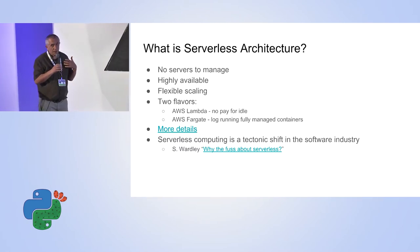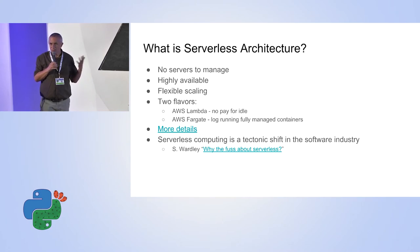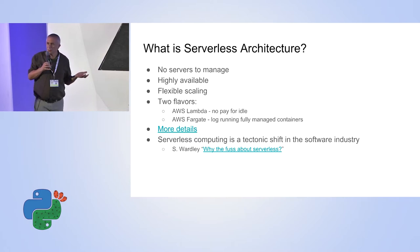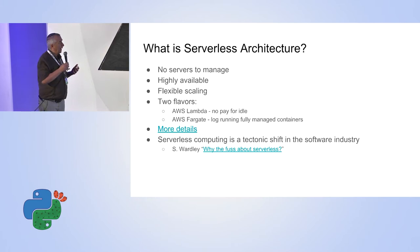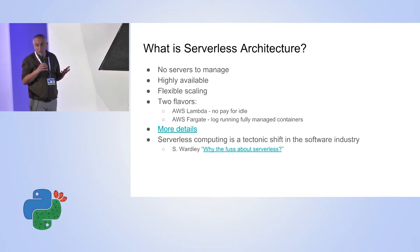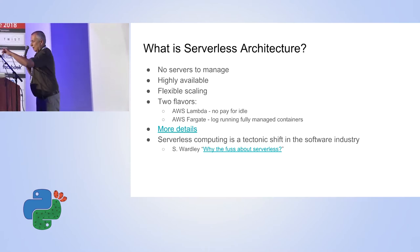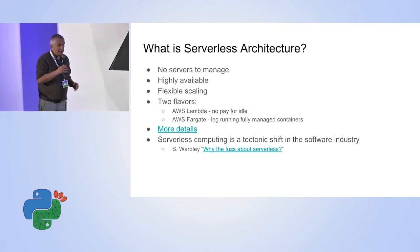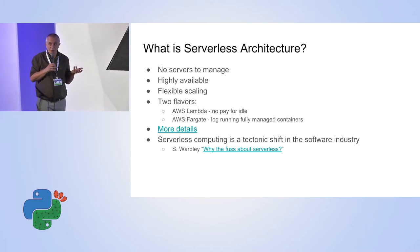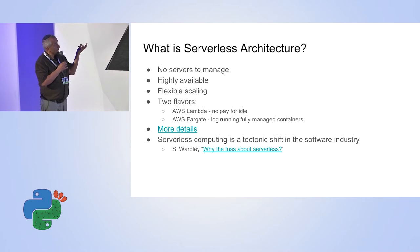Serverless architecture was pioneered by Amazon. Currently every major cloud vendor is closing the gap. There are no servers to manage — it's pure, on-demand computing. It's highly available and highly scalable, which is important. There are two flavors of serverless computing: one is the more traditional AWS Lambda or something similar on Azure or other clouds.